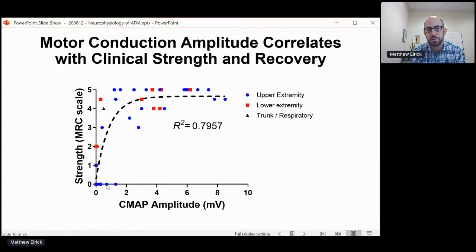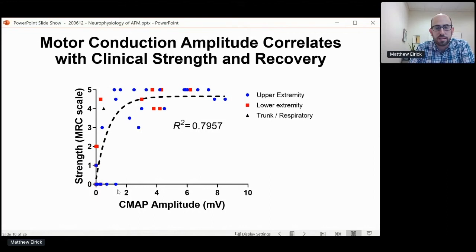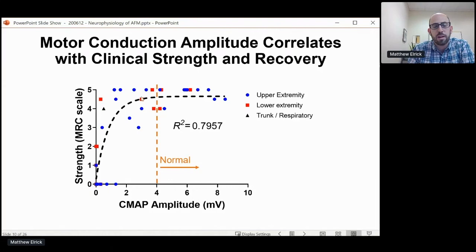One of the things that comes out of this data is specific findings that correlate well with how the patient is doing clinically and might have some predictive prognostic value. Along the x-axis is the motor conduction amplitude, or CMAP amplitude, plotted against the strength of the muscle innervated by the nerve that's tested. Each dot represents one nerve and how strong its muscle is. There's a pretty tight correlation between the CMAP amplitude and the clinical strength of the muscle. Interestingly, there are a number of nerves whose CMAP amplitudes are below the normal range but the patients have normal five-out-of-five strength — evidence of some subclinical injury in seemingly normal muscles.